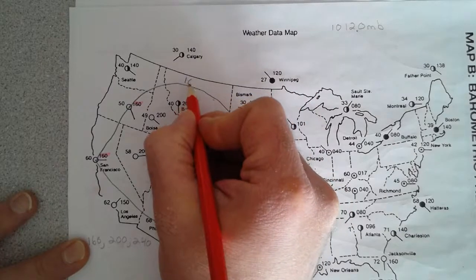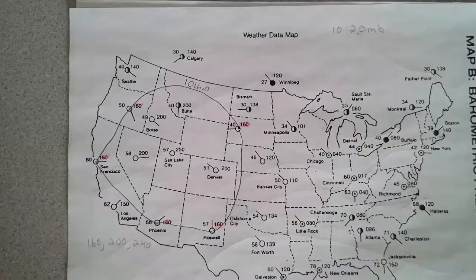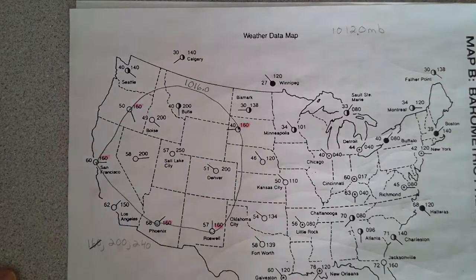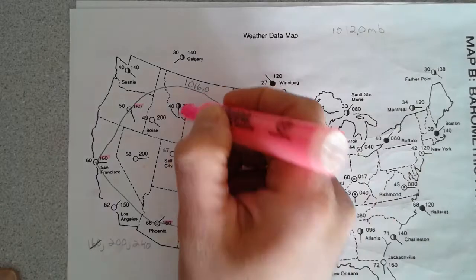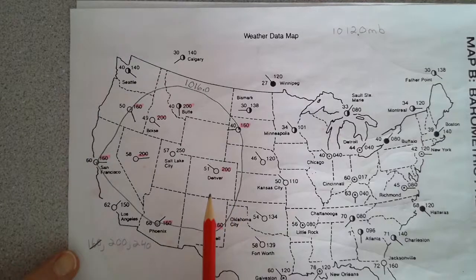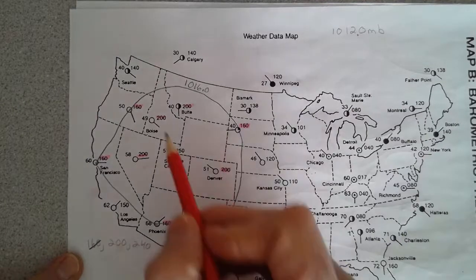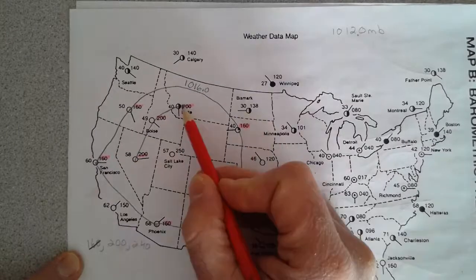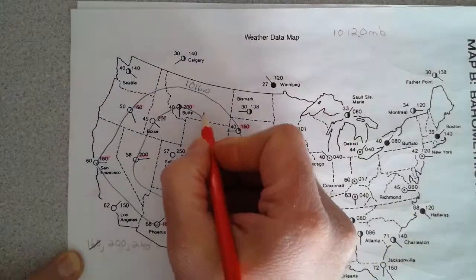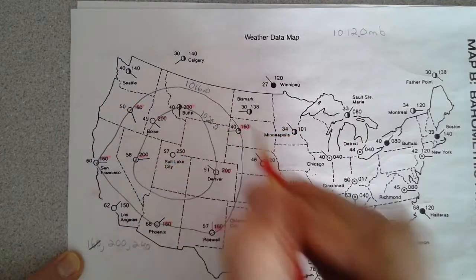The next thing we're going to do is go to the other side of the map — the eastern side. The readings are going to be a lot less, a lot lower. The readings we're going to need here are a 040 line, an 080 line, and a 120 line. The reason is we're starting at 040, which is 1,004 millibars.